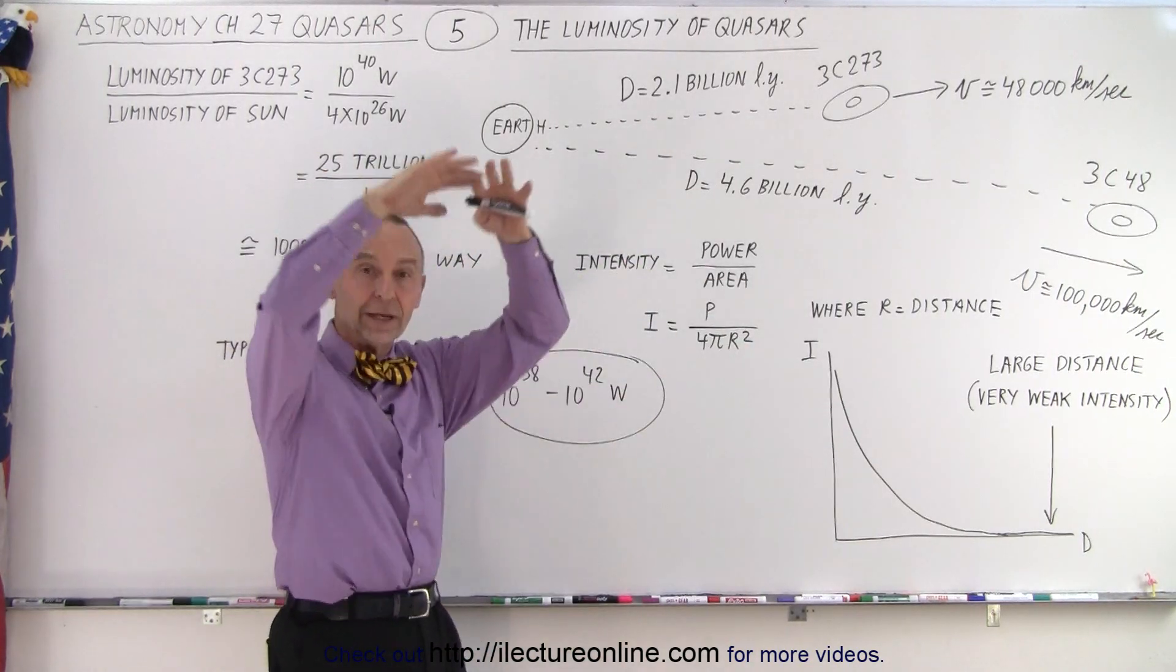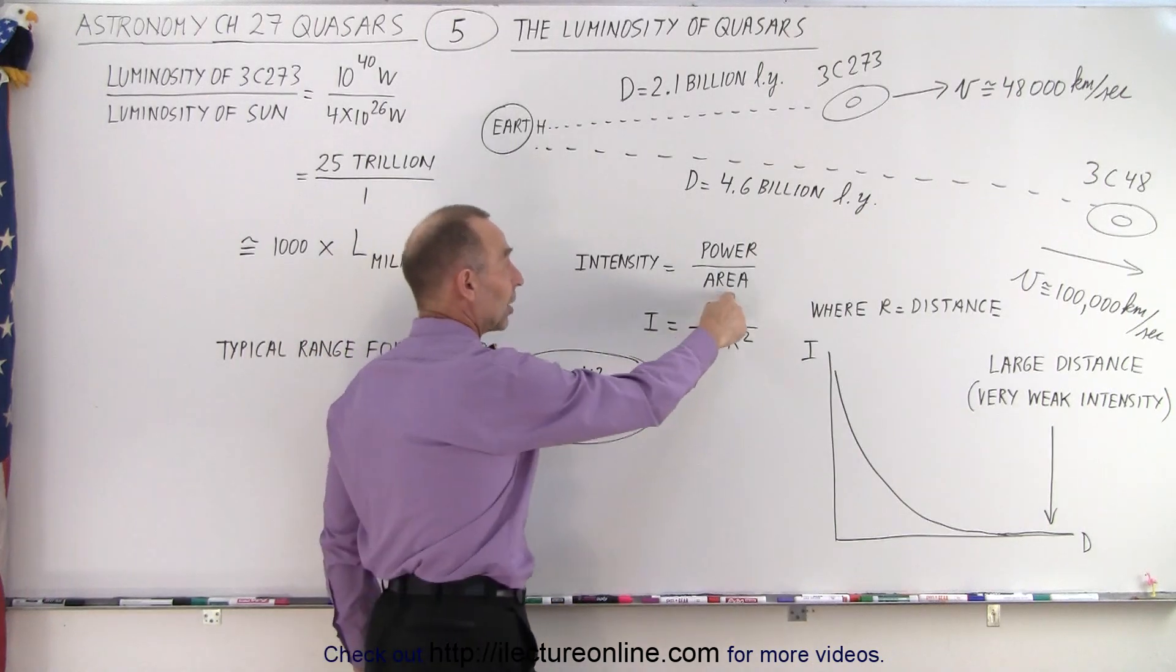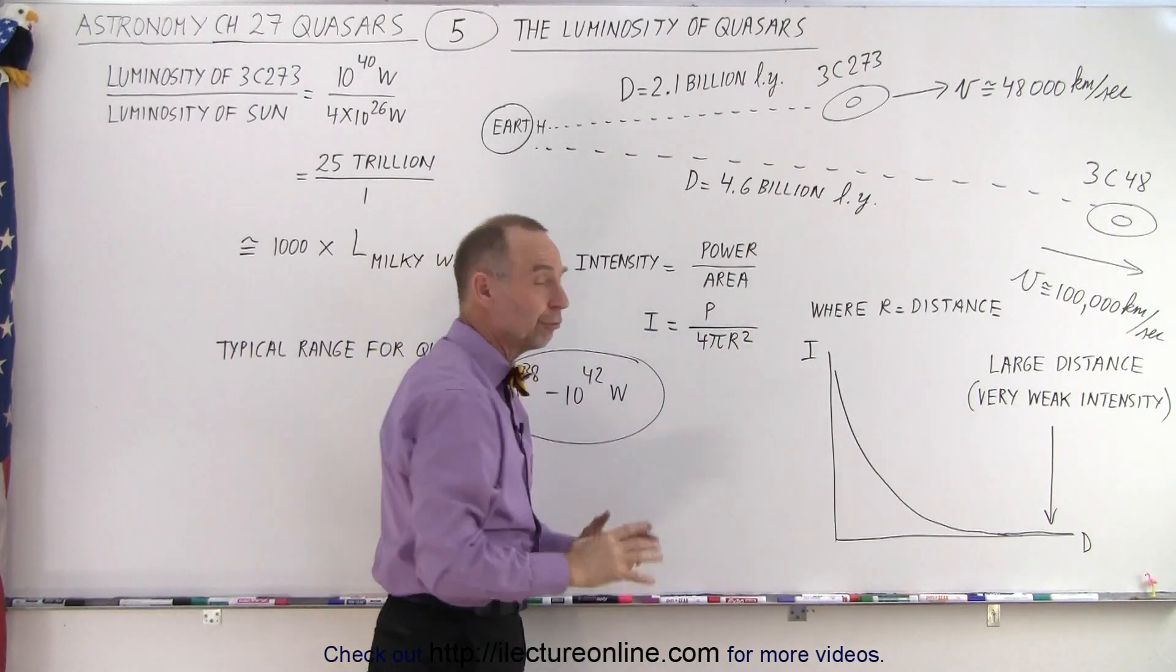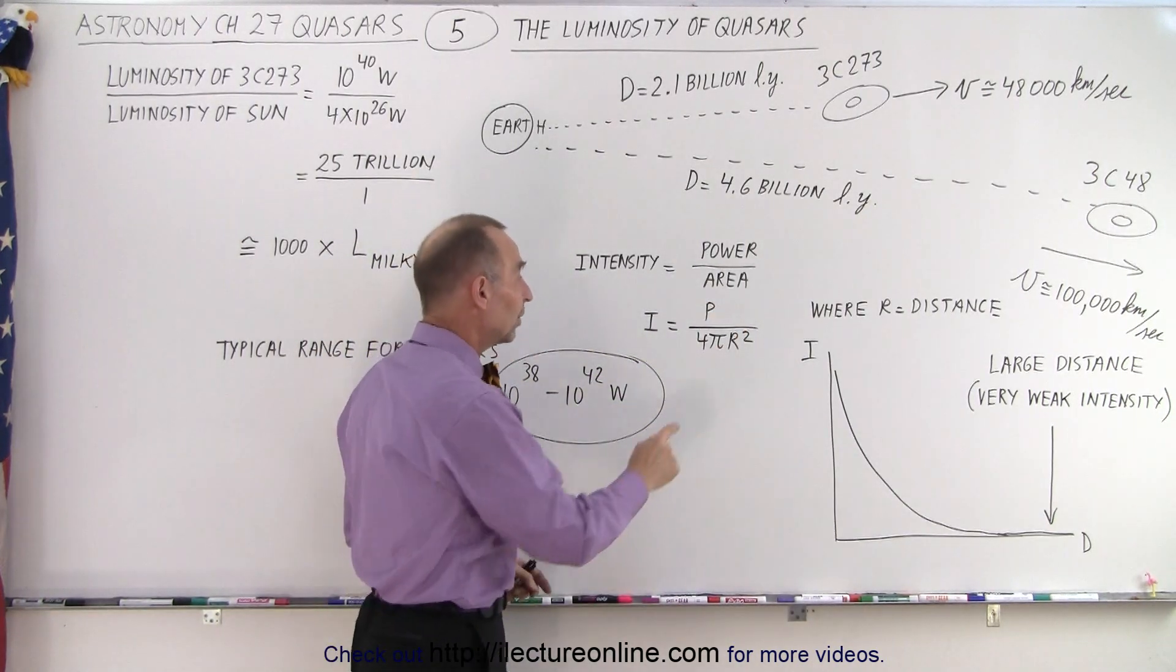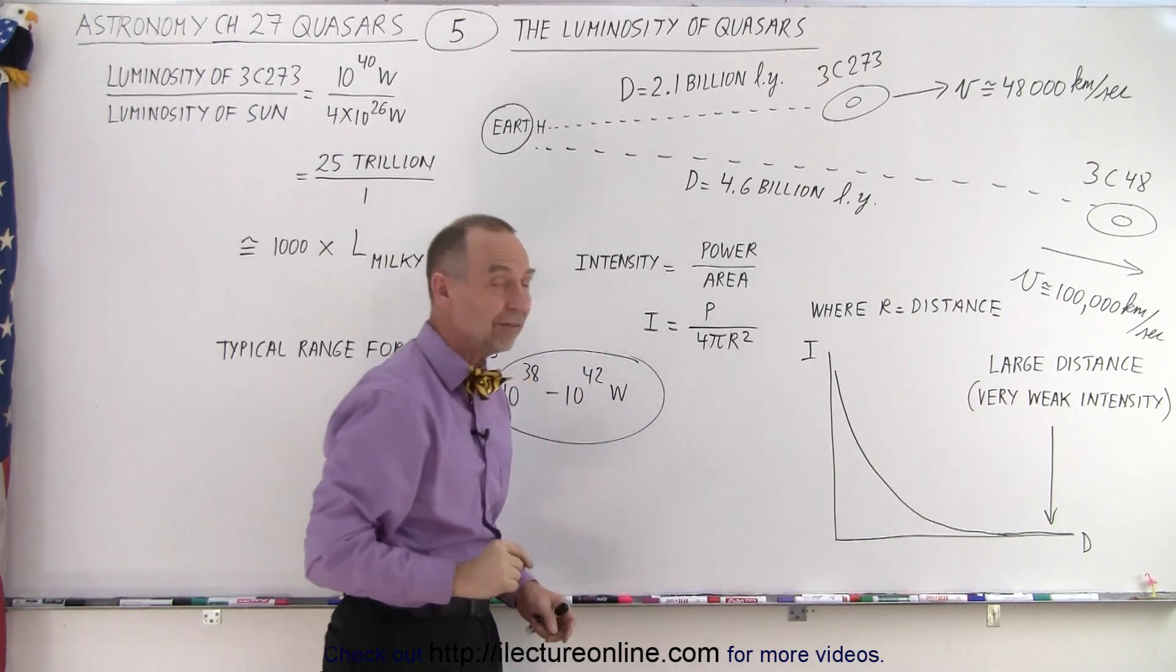So the area we're talking about is the area of a sphere, 4πr². And so we take the power of the source divided by 4πr² and gives us the intensity.